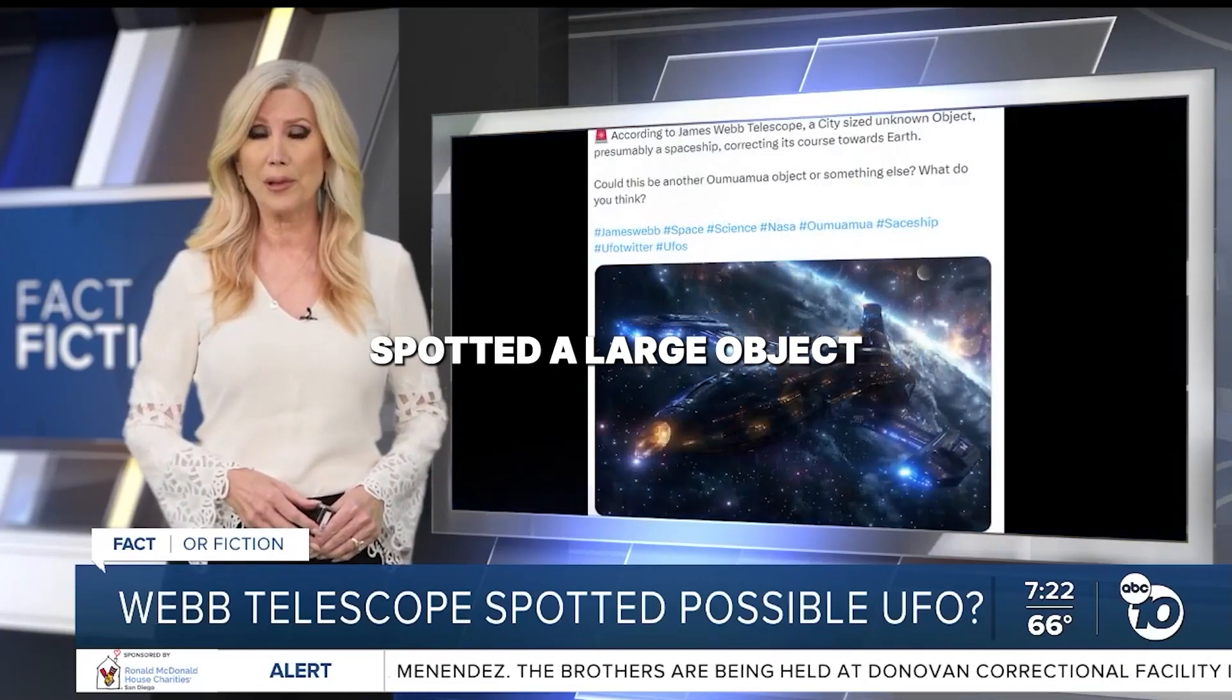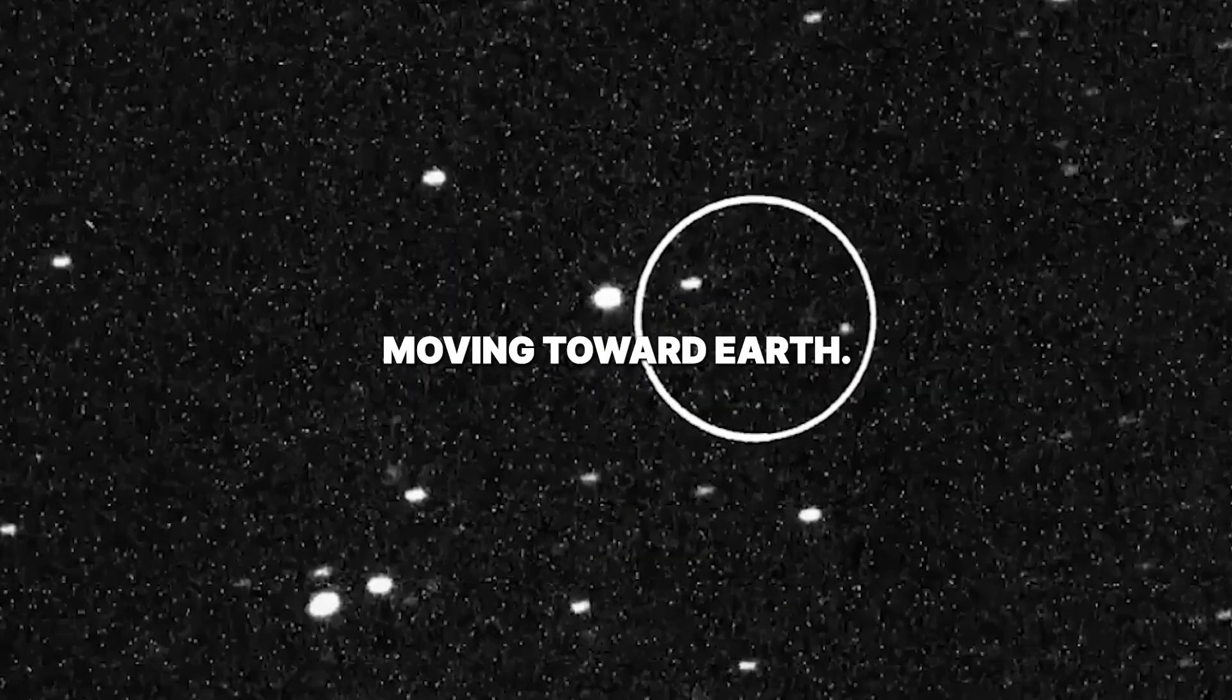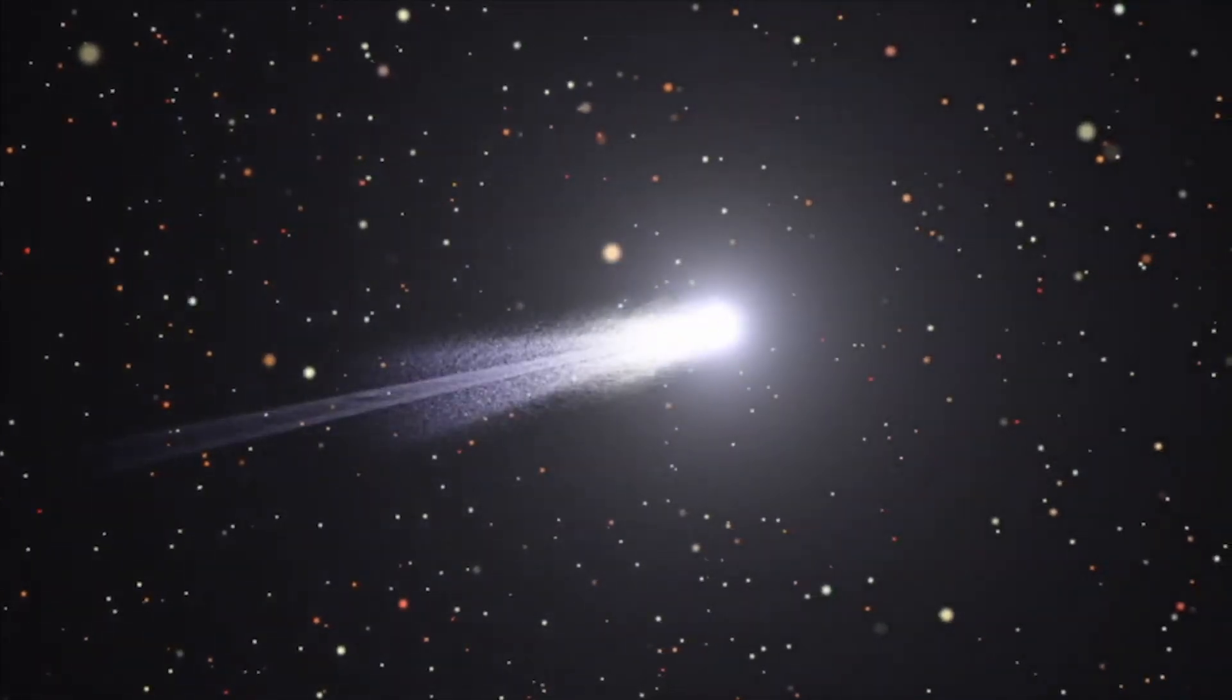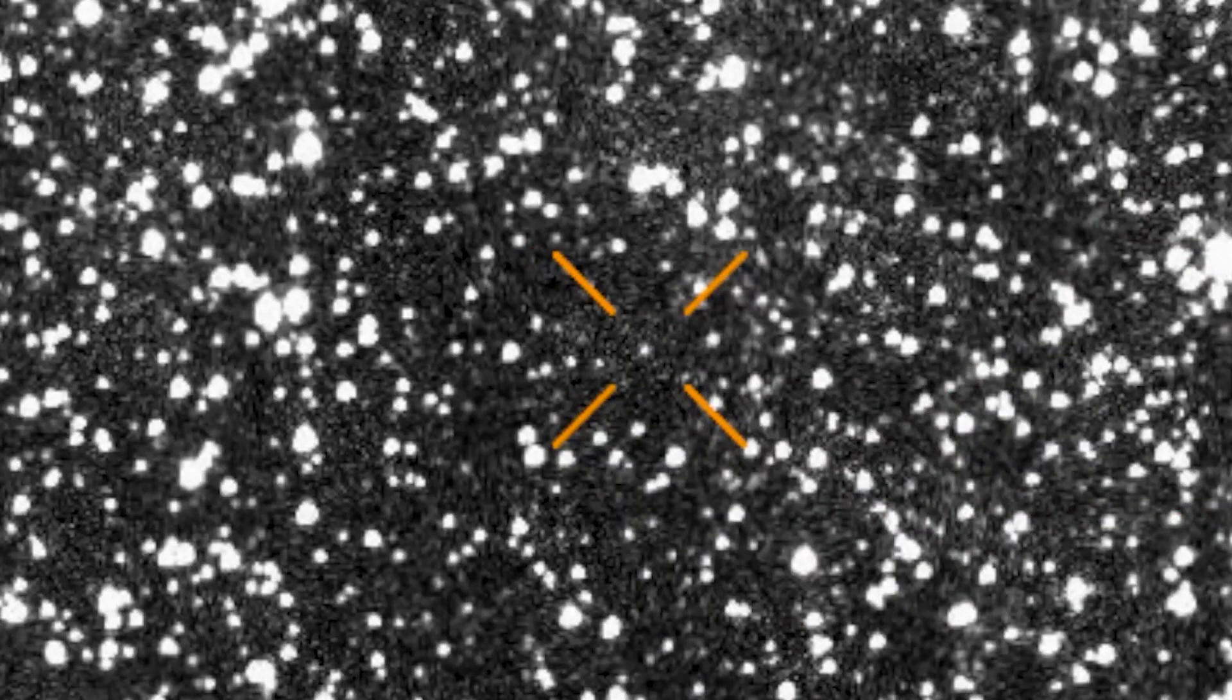The James Webb Space Telescope spotted a large object moving toward Earth. The story of Comet 3i Atlas was a global suspense thriller. Would it hit? Would it change everything?